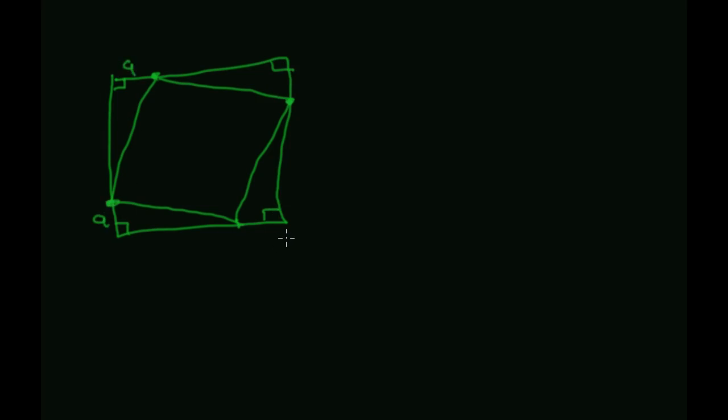So the short side and all four triangles we're going to call A. The medium length side we're going to call B. And the long side we're going to call C.